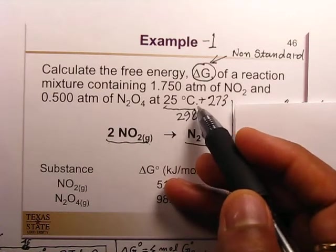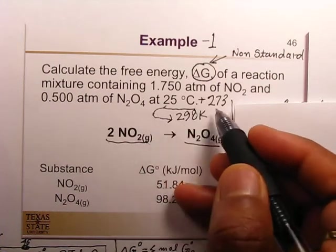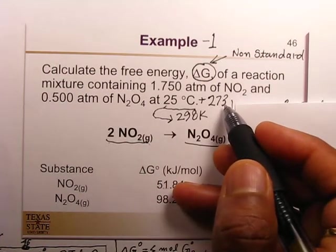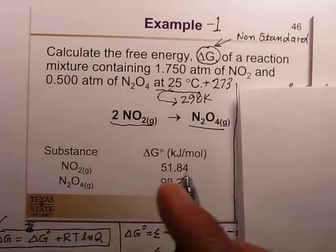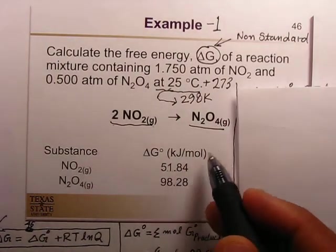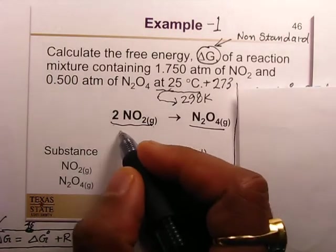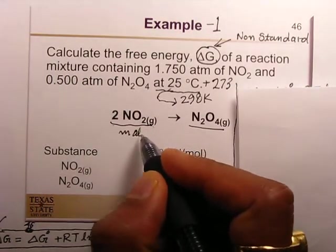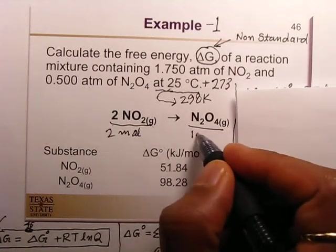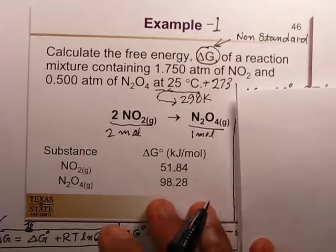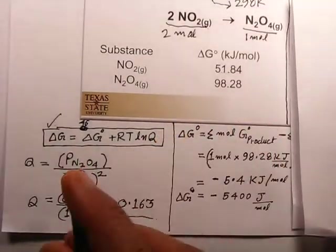25 degrees Celsius is equal to 298 Kelvin. The values for delta G for reactant and products are given, and this is the reaction where two moles of reactant are reacting to make one mole of product. We have to calculate delta G for this reaction.